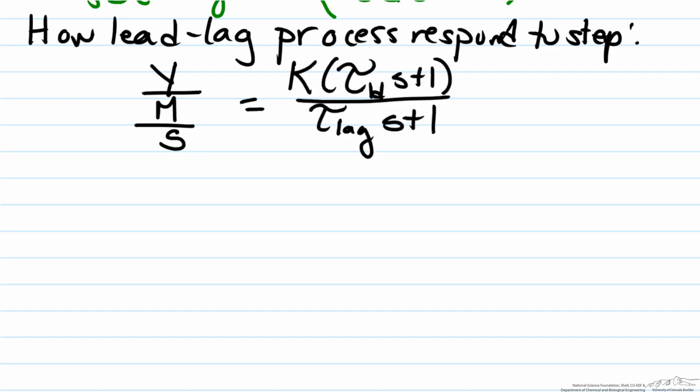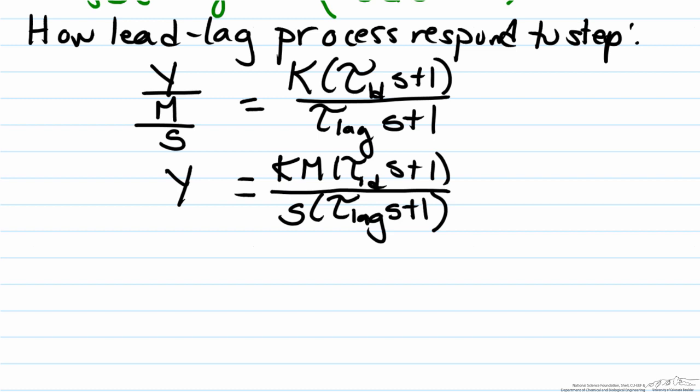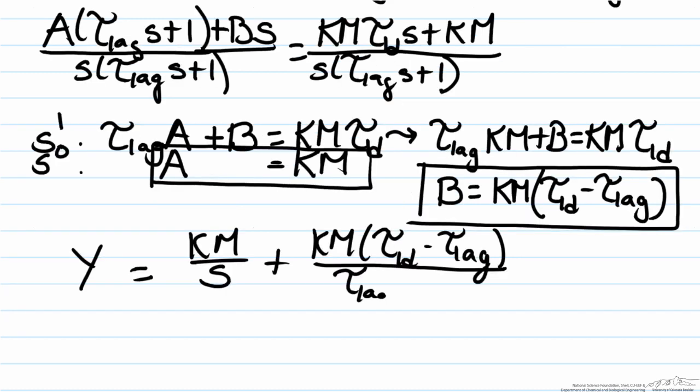We move the m over s over and we end up with, from here we can break this down into its specific roots, so s and tau lag s plus one, and we can use partial fractions to solve for a and b. So we now have our equation.